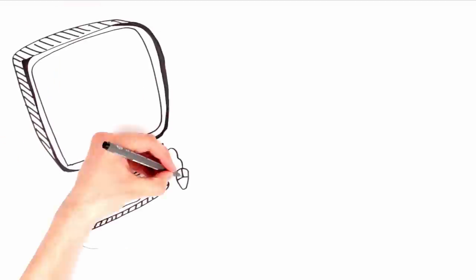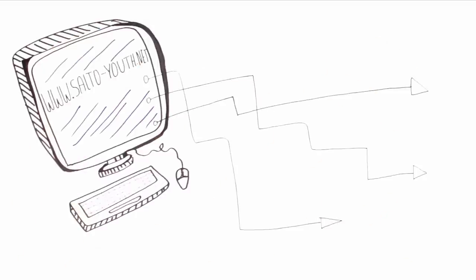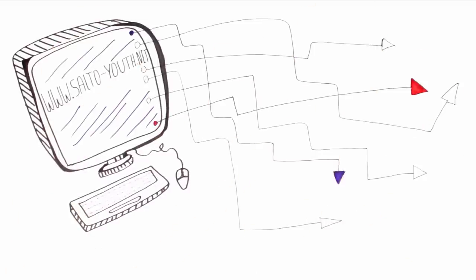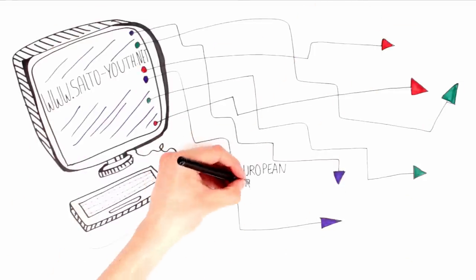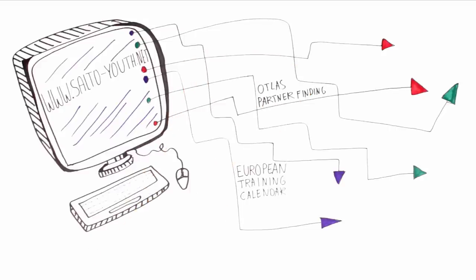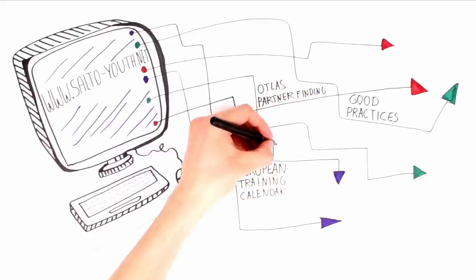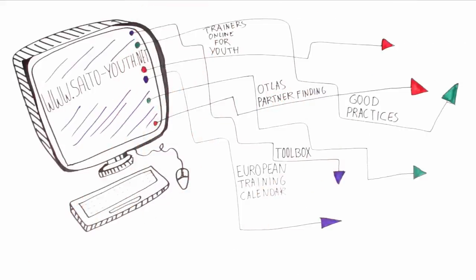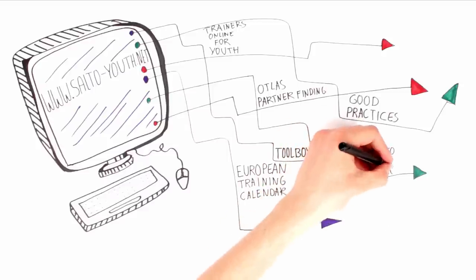The network has a common website www.salto-youth.net where a variety of resources and online tools can be found, such as the European training calendar, OTLAS, a tool for partner finding, the best practice projects database, the toolbox for training and youth work, and the database of youth field trainers active at European level, Trainers Online for Youth.